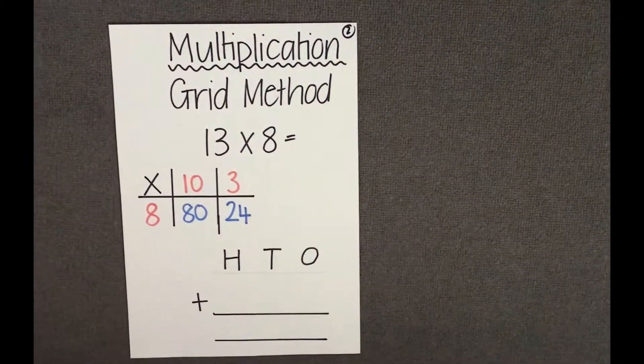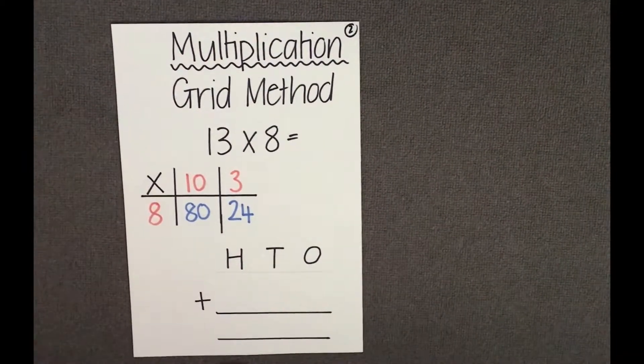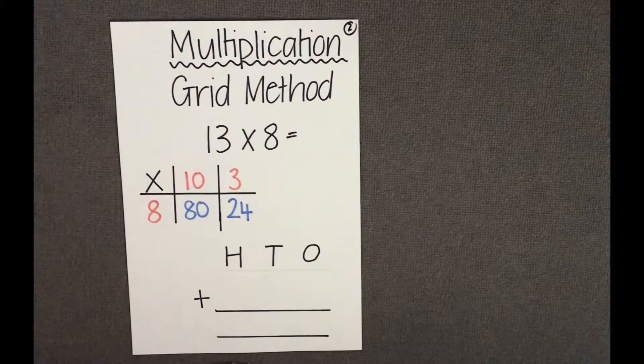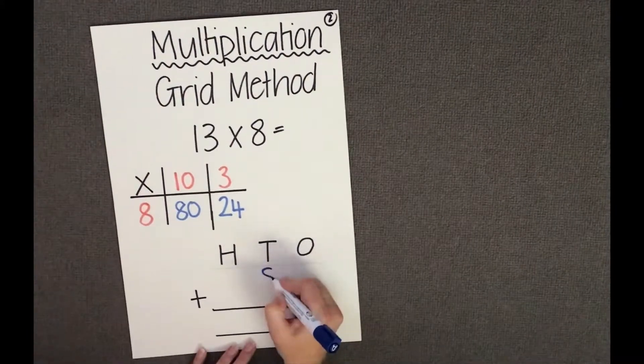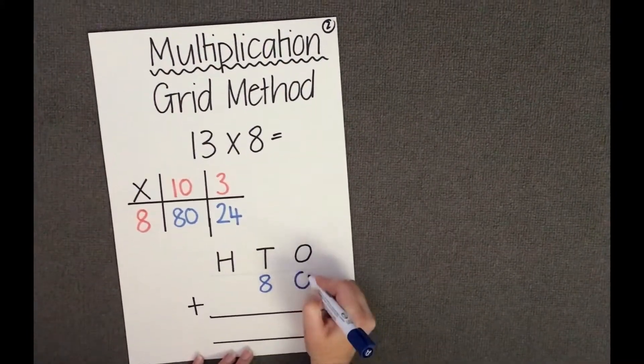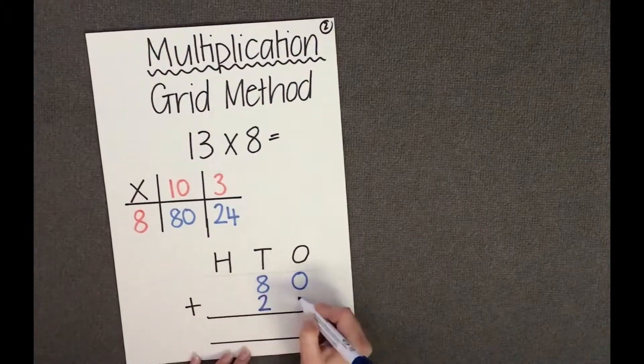Now let's take our answers and add them together. We can use the column method for addition to help us. So we have 8 tens or 80 and we're going to add on 24.